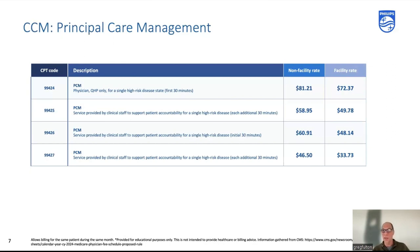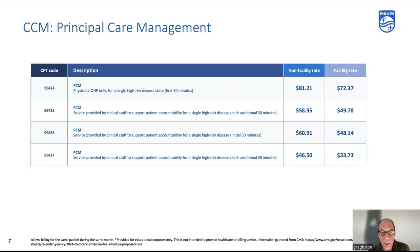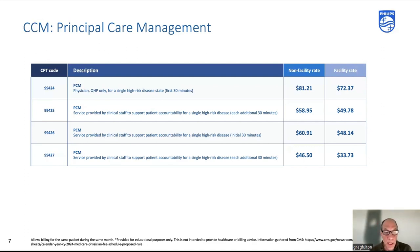Principal care management was adopted a couple of years ago — for a single high-risk disease state. Historically, CCM codes are set up for multiple chronic conditions. CMS came out with the PCM codes for a single chronic condition to add flexibility. So if you have an RPM patient, where do they fit? Multiple chronic conditions points toward CCM codes; a single chronic condition you really want to focus on may be better served by principal care management.